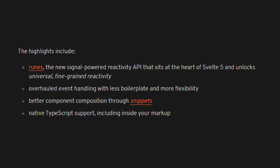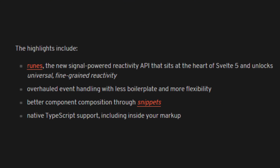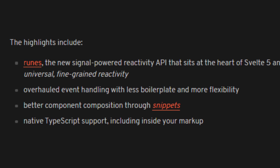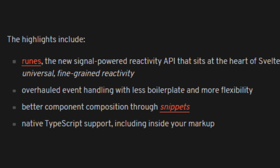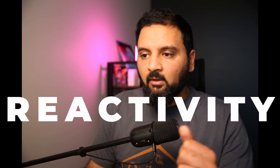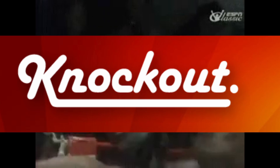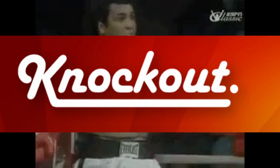A few changes in this new version include less boilerplate and more flexibility, better component composition with a lot of help from snippets, and native TypeScript support even inside your markup. The biggest change, however, is reactivity. Svelte is now using signals for reactivity, and signals are not new. Signals have been popularized by SolidJS, and even Angular is now using signals, but it all started with KnockoutJS, who initially implemented the concept.